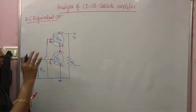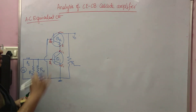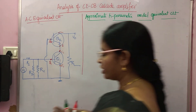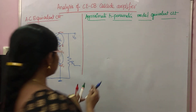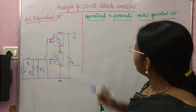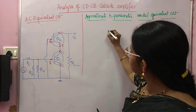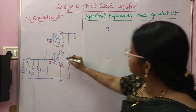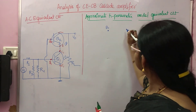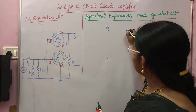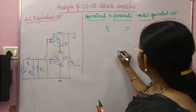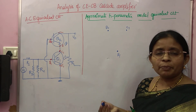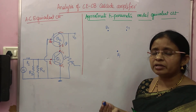The next step is to replace the transistors with their approximate H parameter model. For the first stage CE, between base B1 and emitter you have HIE, and between collector and emitter you have HFE times IB.